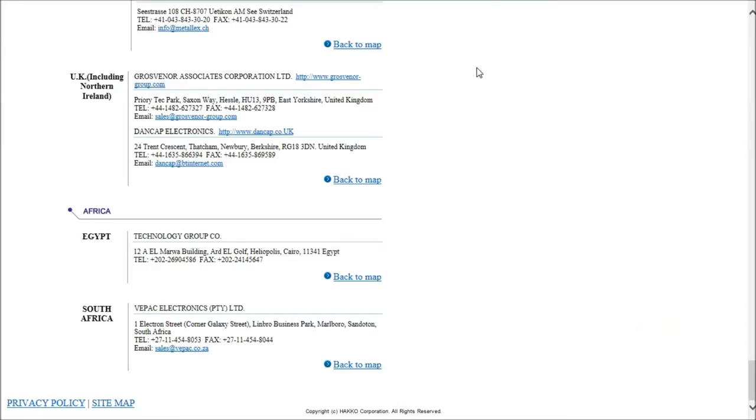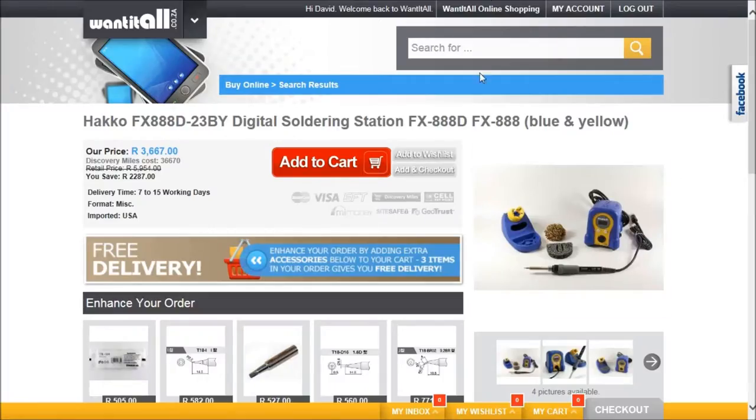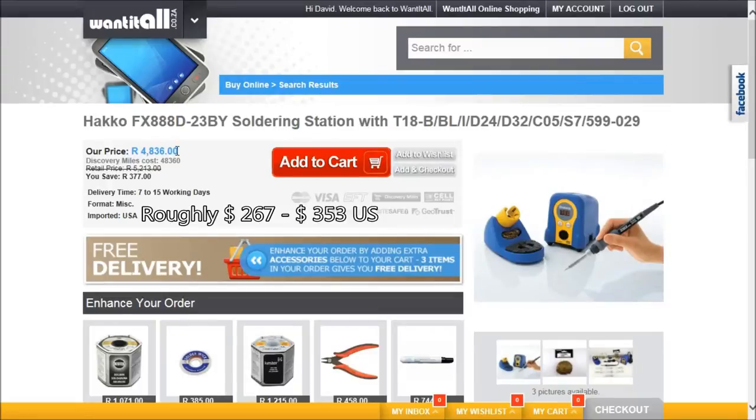If you wanted to buy it directly for a consumer type package, there's a site in South Africa called WantItAll, which ranges from about 3,600 Rand all the way through to 4,800 Rand. So that's about three, four hundred US dollars for this thing. Now in the US you can obviously pick these up for under a hundred dollars.